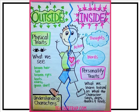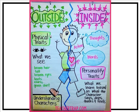Remember, nouns are people, places, and things, and verbs are things we do. So adjectives are things that we use to describe — how we describe stuff. We can describe people or animals, characters, by what they look like on the outside, or how they are on the inside.